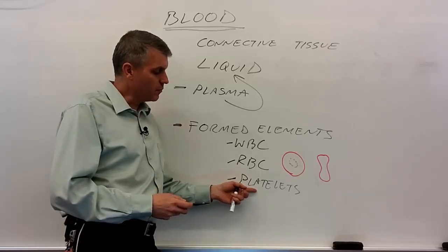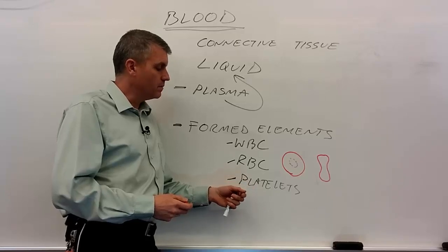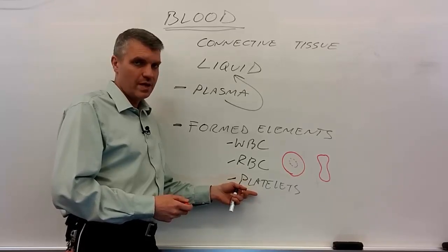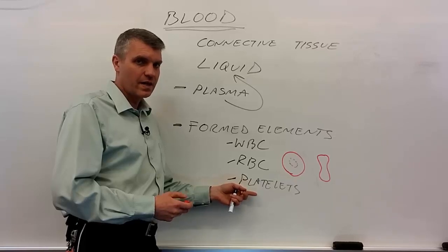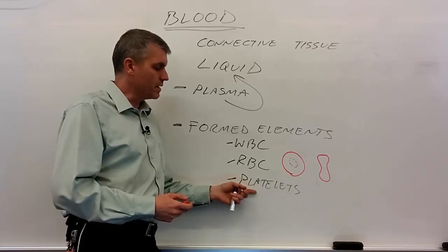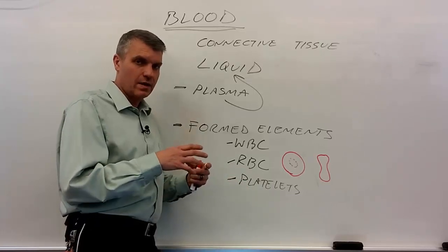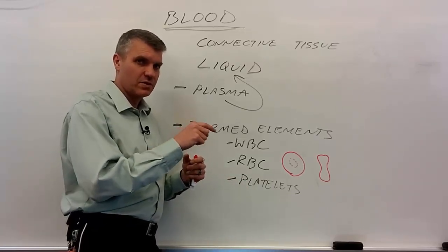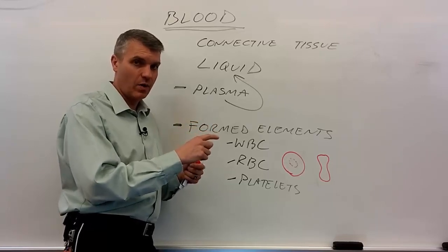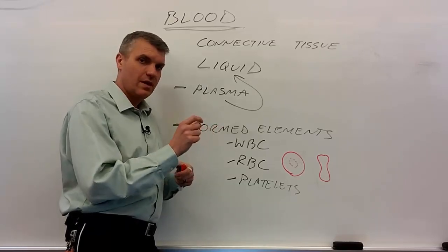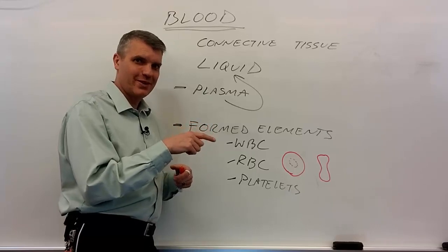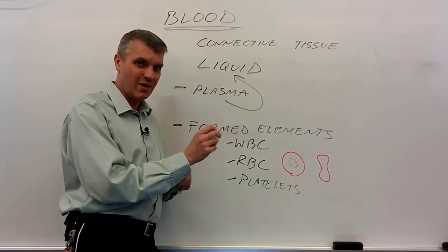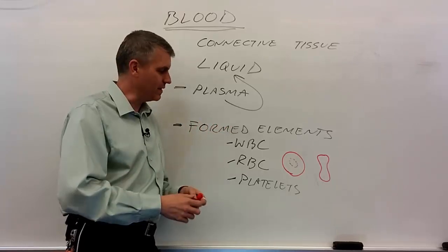Platelets also come from red bone marrow and have an interesting birth. They're made by cells called megakaryocytes. Megakaryocytes inside red bone marrow are very large cells that send tendrils into the capillaries inside the red bone marrow. Those tendrils fill with the substance needed for a functioning platelet, and then they start pinching off into little pieces that become the platelets.